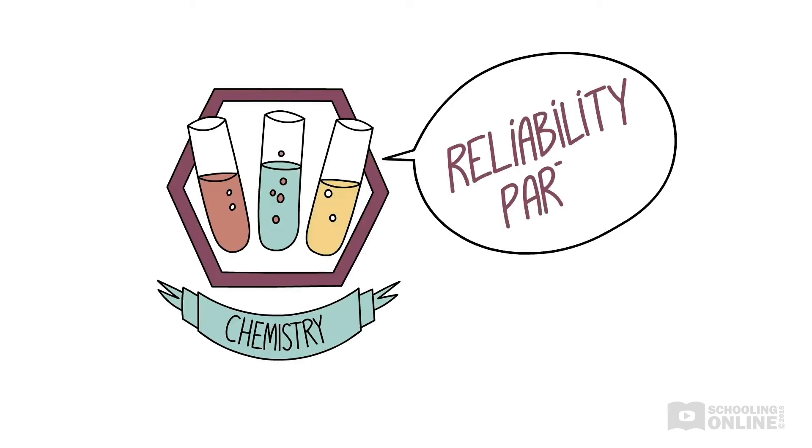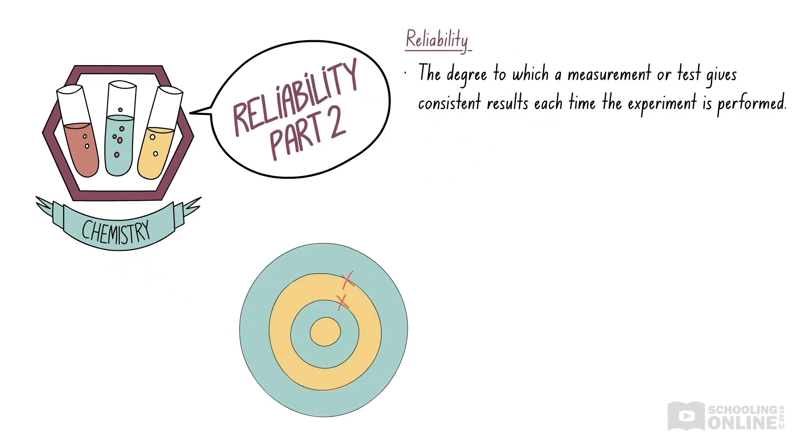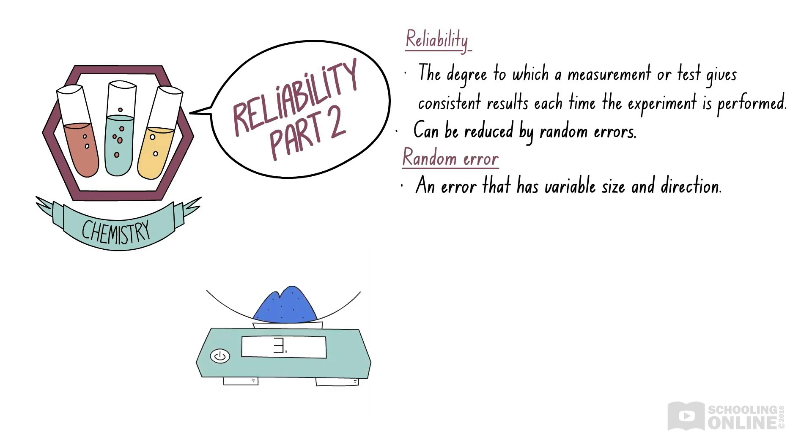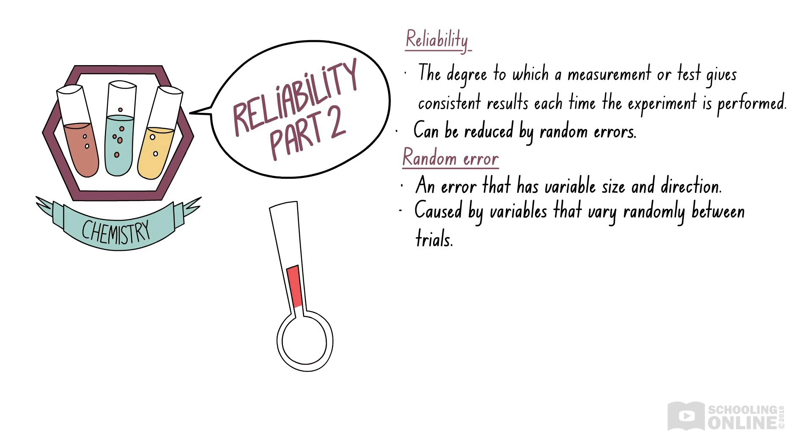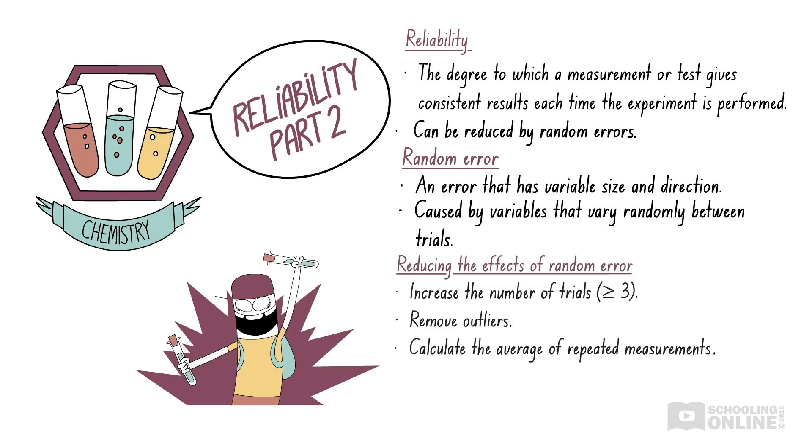Let's revise what we've discussed in this video. Reliability is the degree to which a measurement or test gives consistent results each time the experiment is performed. The reliability of an experimental procedure can be reduced by random errors. A random error is an error that has variable size and direction. Random errors are caused by variables that vary randomly between trials, such as temperature. We can reduce the effects of random error by increasing the number of trials we perform, removing outliers from our results, and calculating the average of repeated measurements.